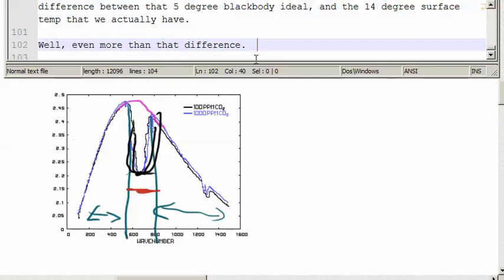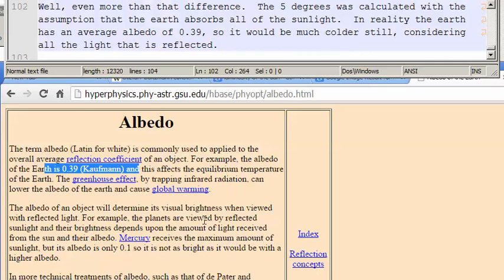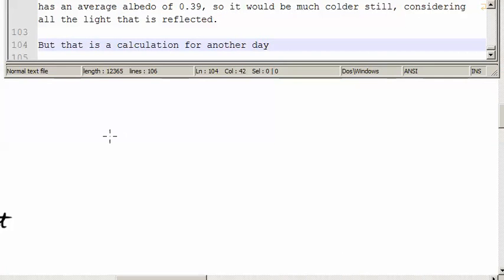Well, even more than that difference, really. The 5 degrees was calculated with the assumption that the Earth absorbs all of the sunlight. In reality, the Earth has an albedo of 0.39, and it would be much colder still than 5 degrees, considering all the light that is reflected. But, that's a calculation for another day. Thank you.